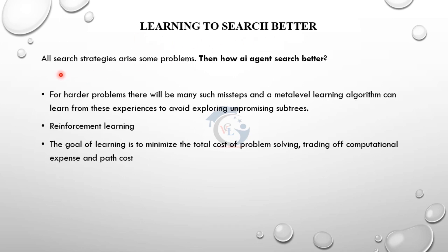Learning to search better: in all search strategies there is a drawback or problem. How can the agent search better? We can use a meta-level learning algorithm. We can search using any other experience to avoid those drawbacks. This is a sub-field of machine learning. In machine learning, reinforcement learning is a sub-field that helps with this.